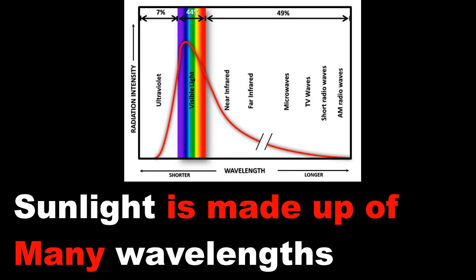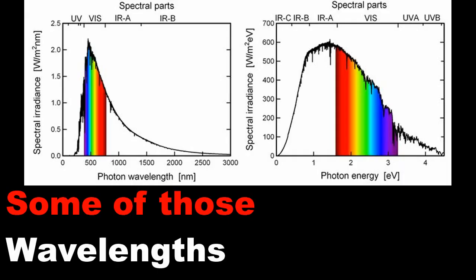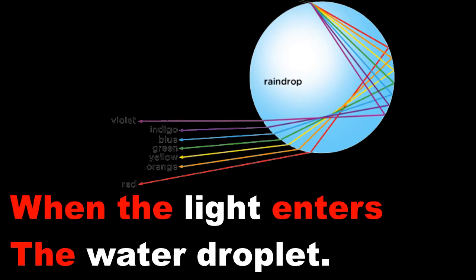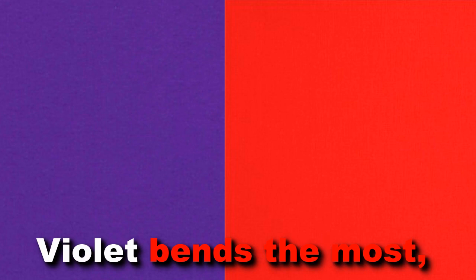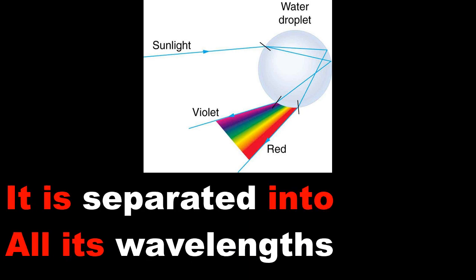Sunlight is made up of many wavelengths or colors of light. Some of those wavelengths get bent more than others when the light enters the water droplet. Violet is the shortest wavelength of visible light that bends the most, and red is the longest wavelength of visible light that bends the least. So when the light exits the water droplet, it is separated into all its wavelengths.